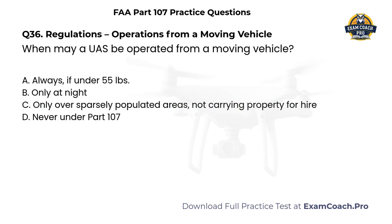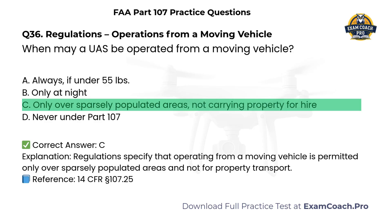Regulations — Operations from a Moving Vehicle. When may a UAS be operated from a moving vehicle? A. Always if under 55 pounds. B. Only at night. C. Only over sparsely populated areas, not carrying property for hire. D. Never under Part 107. Correct answer: C. Only over sparsely populated areas, not carrying property for hire. Regulations specify that operating from a moving vehicle is permitted only over sparsely populated areas and not for property transport.